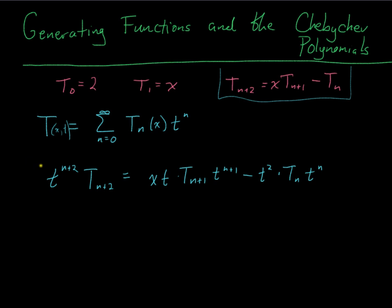Now I'm going to sum this thing from 0 to infinity. Every time... Well this first one, I've got, if I put n equals 0, I have T₂ times t², then n equals 1, I've got T₃ times t³, then T₄ times t⁴.